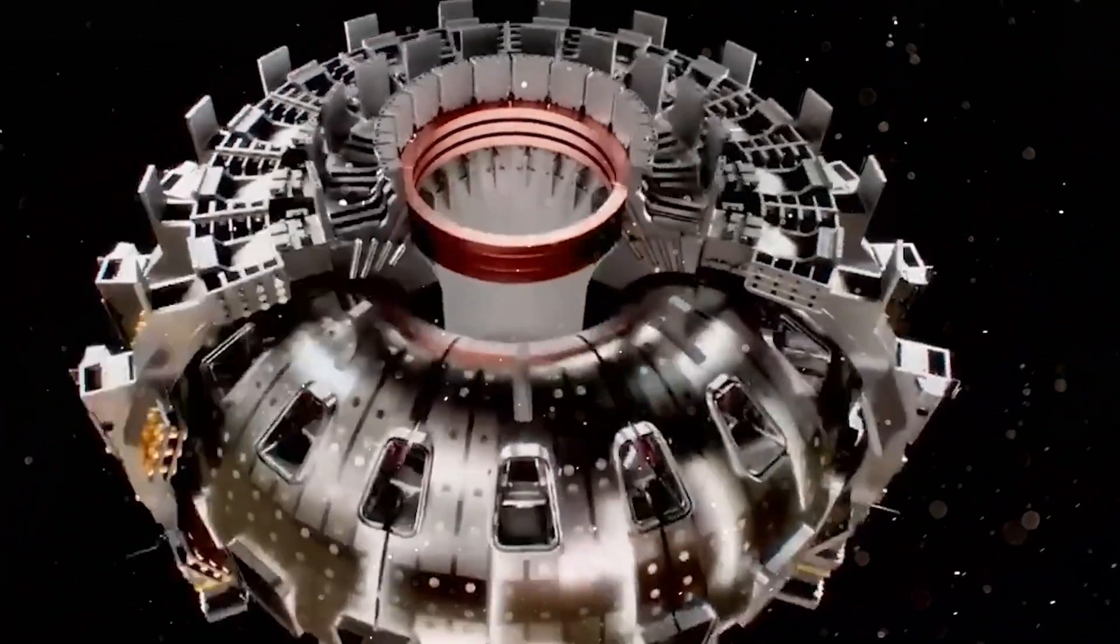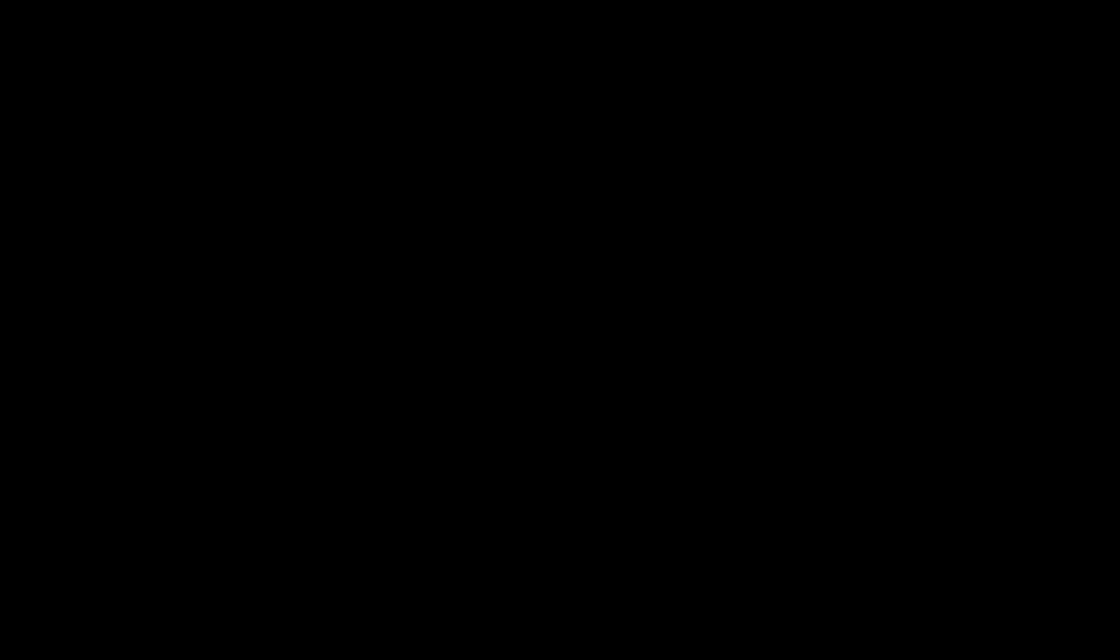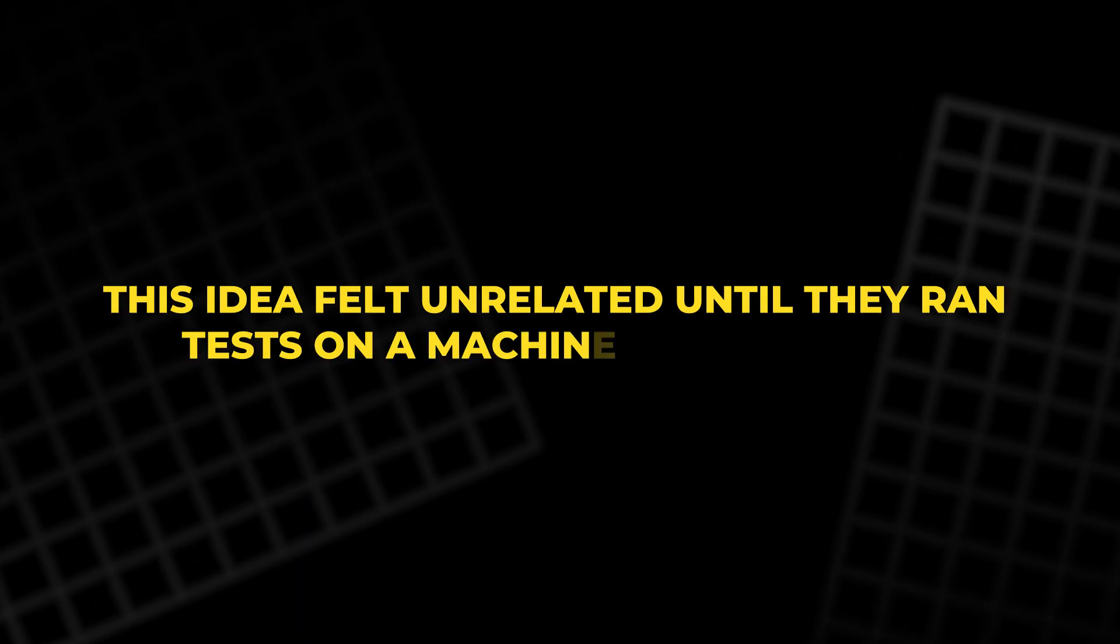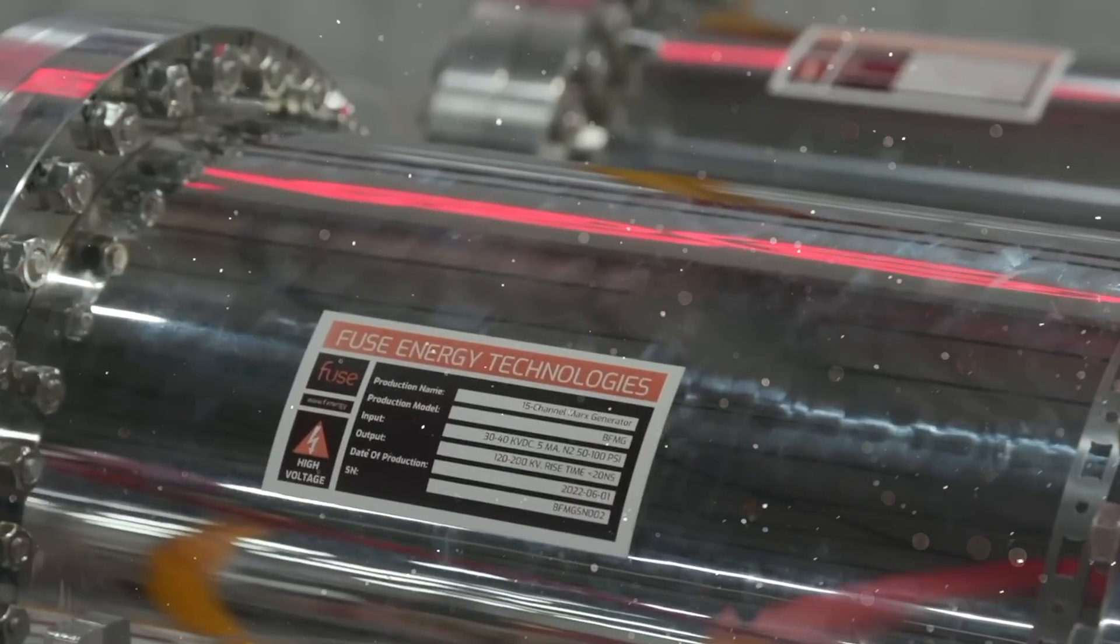One founder had done turbulence work in graduate school and understood that certain shear forces could stabilize vortices. This idea felt unrelated until they ran tests on a machine called Marty. They pulsed the cathode from zero to 100 kilovolts to study how the instability formed.